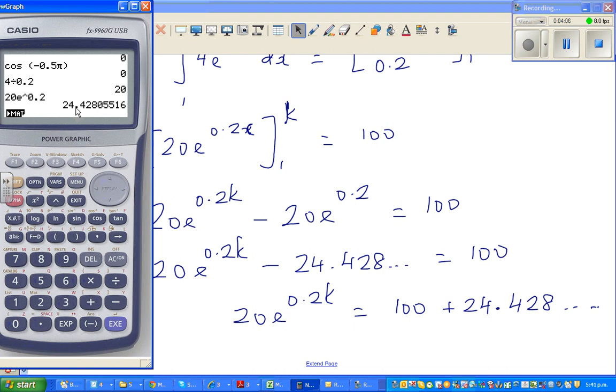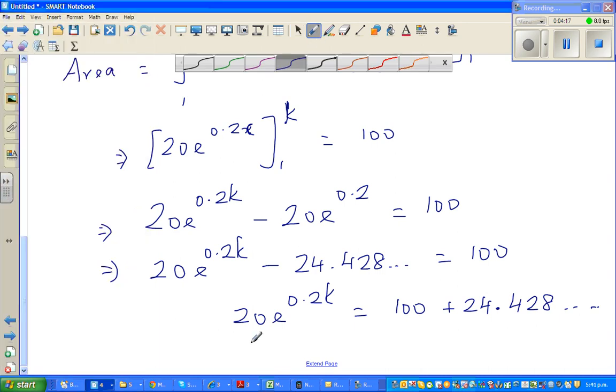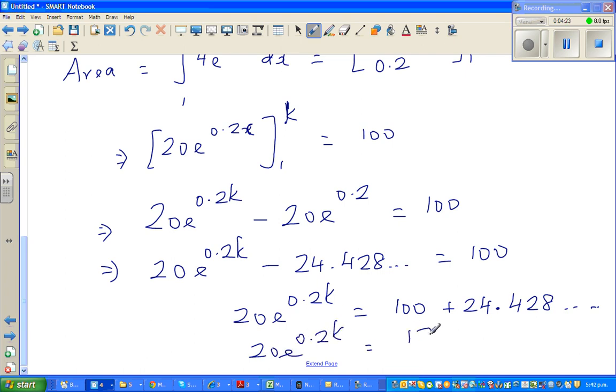Already it's there, so you add, this is answer plus 100, which is 124. So this is 20e to the power 0.2k is 124.428 dot dot dot.